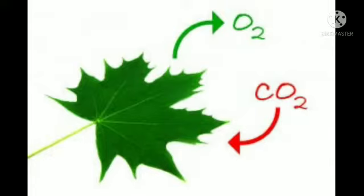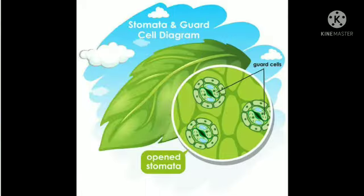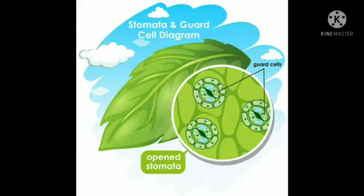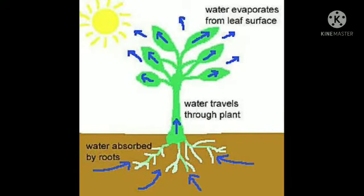To prepare food, plants need carbon dioxide also. To take in carbon dioxide, leaves have tiny holes on them called stomata. The carbon dioxide from the air enters the leaves through these stomata, and oxygen comes out through them.